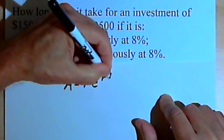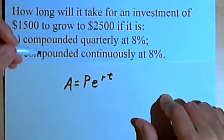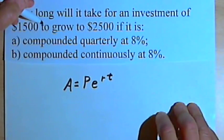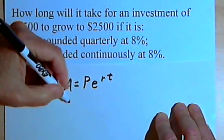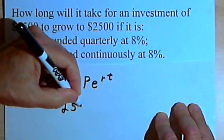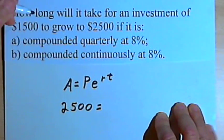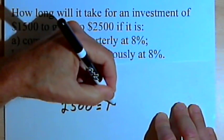we use a different formula. That one is A equals P times e raised to the rt. So A, once again, is the amount we end up with. And we end up with $2,500. P is the principal. That was $1,500.